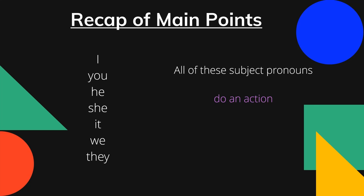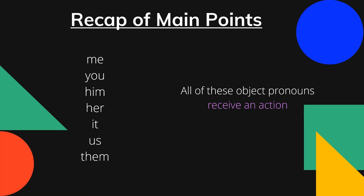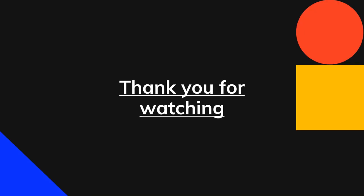I really hope that you are grasping what we're doing today. To recap our main points: I, you, he, she, it, we, they — these are all subject pronouns because they do an action. Me, you, him, her, it, us, them — these are object pronouns receiving an action. Thank you so much for watching and look out for more videos. Bye!